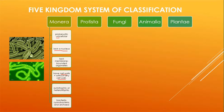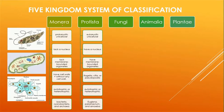Regarding mode of nutrition, Monera organisms are autotrophic as well as heterotrophic. Autotrophic organisms can prepare their own food, while heterotrophic organisms cannot and are dependent on other organisms. Examples include bacteria, cyanobacteria, and archaea. The second kingdom is Protista, where eukaryotic unicellular organisms are placed.